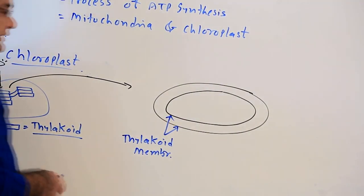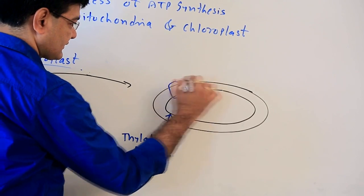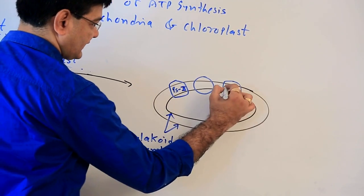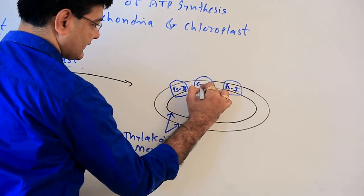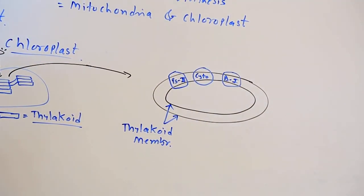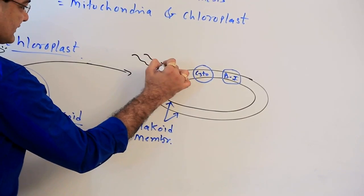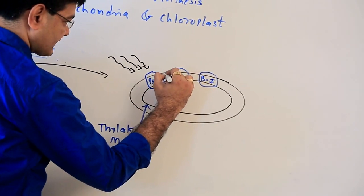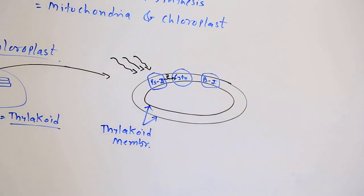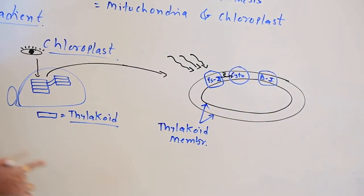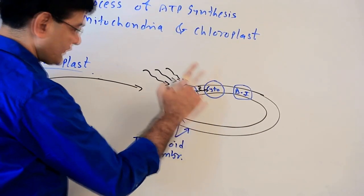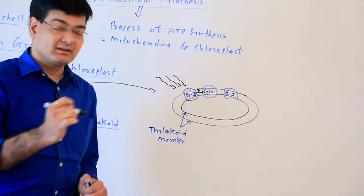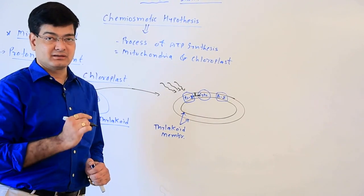In the thylakoid membrane, different kinds of pigment systems are present — PS2, PS1, and different cytochromes. Remember that cytochrome is an electron acceptor, but its main function is to act as a hydrogen carrier, or we can say a proton carrier.